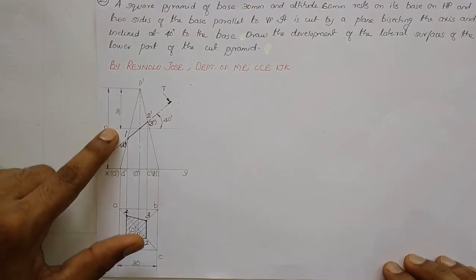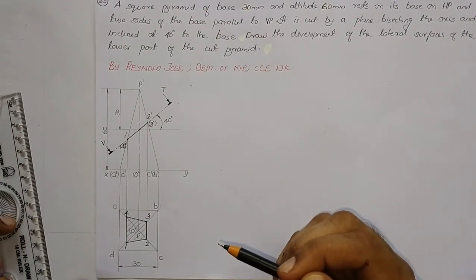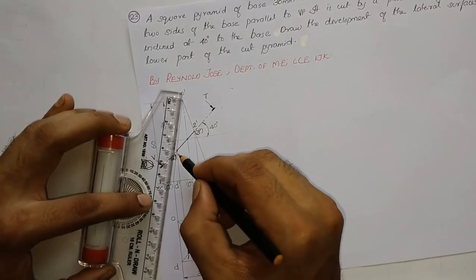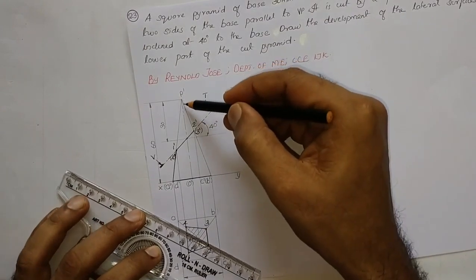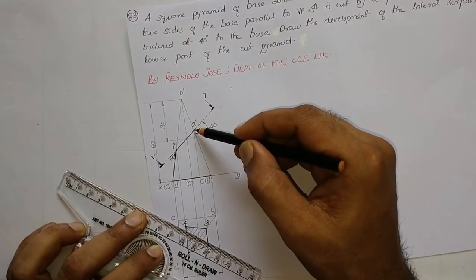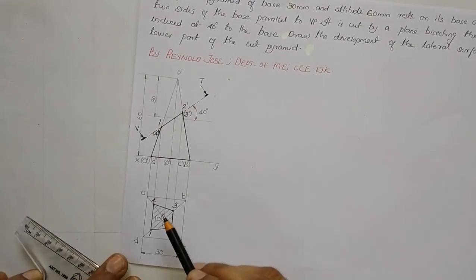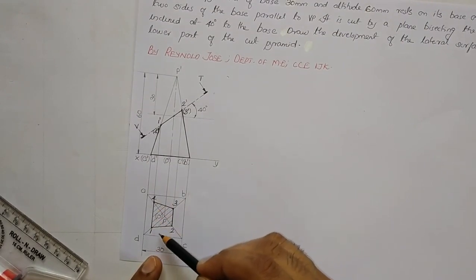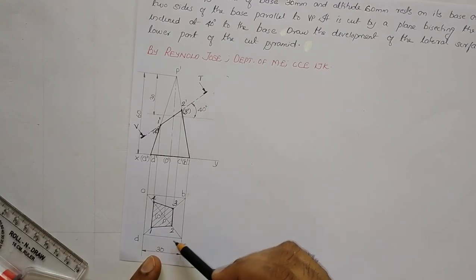We now mark the remaining regions in the front view and top view. The region above the section plane is removed; the portion below remains. P'D' is only remaining up to 1', so we keep 1'D'. The base is completely remaining. P'C' is only remaining up to 2', so we join 2' and C'. In the top view, the remaining portions outside the hatching line are edges 1D, 4A, 3B, 2C and the base edges AB, BC, CD, and DA.